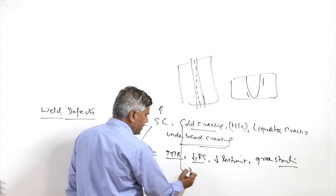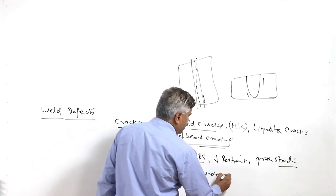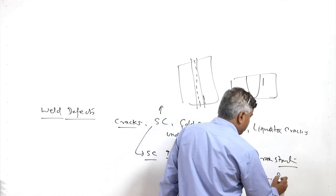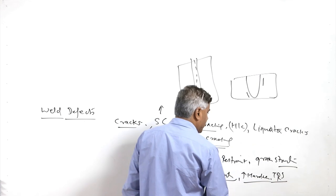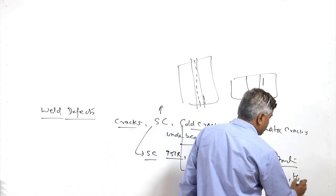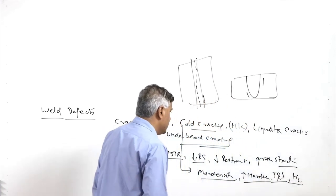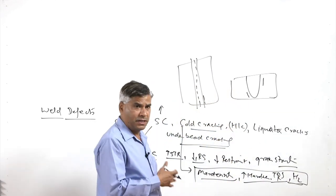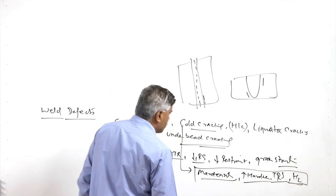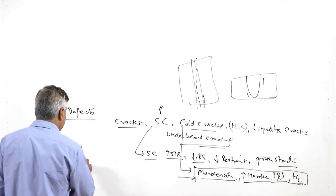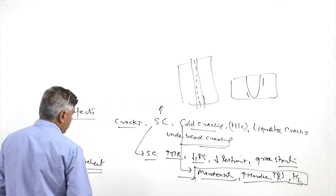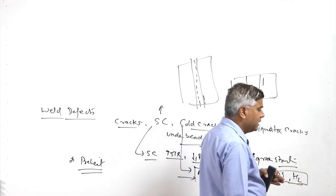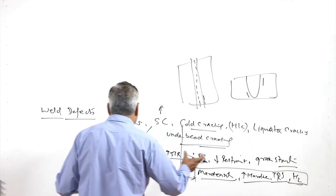Cold cracking is mostly caused by high hardness due to martensitic transformation, development of tensile residual stresses, and hydrogen concentration in and around the weld zone. Cold cracking is also called delayed cracking because it occurs some time after development of the weld joint. To address these factors, preheating is an important step: it reduces martensitic transformation, reduces hardness, reduces tensile residual stresses, and allows effective diffusion of hydrogen from the weld zone.